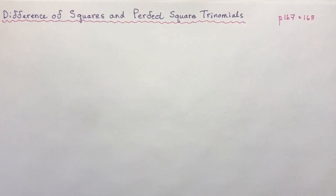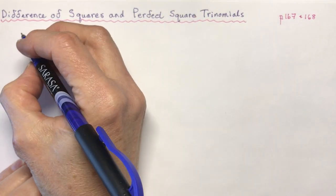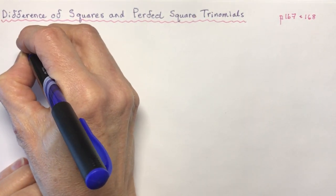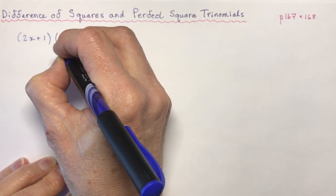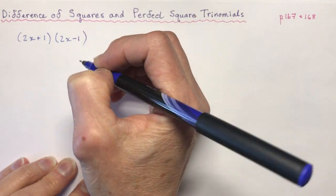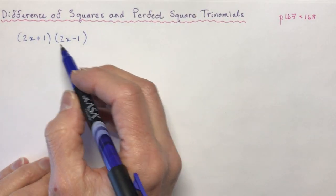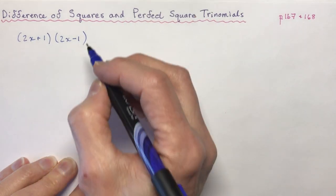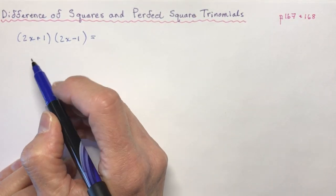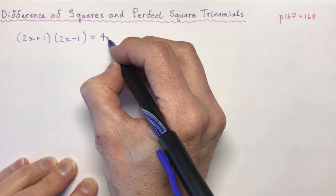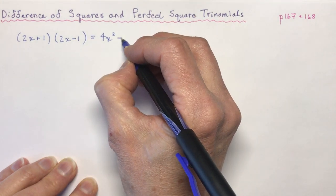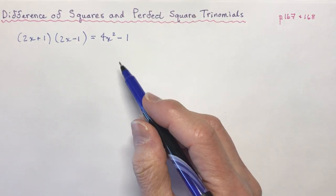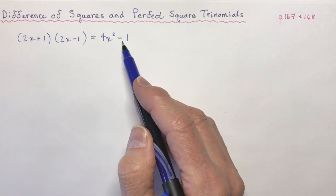Today we're covering difference of squares and perfect square trinomials. Difference of squares — we'll talk about that one first. From a previous lesson we had the product of a sum and difference, something like this, and when you expand and simplify you get 4x squared, then minus 2x plus 2x, then minus 1. So this is what we call a difference of squares.